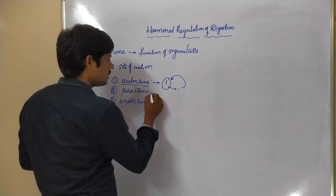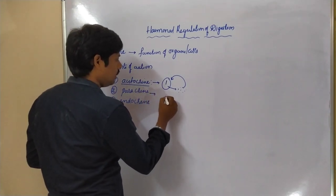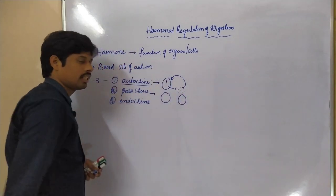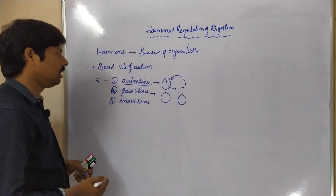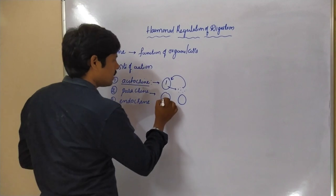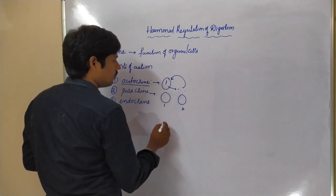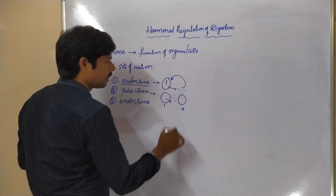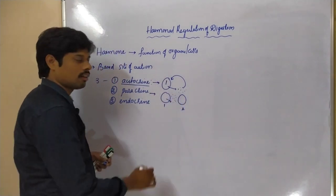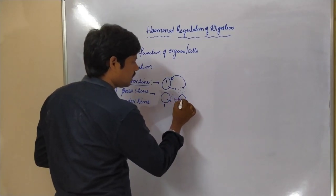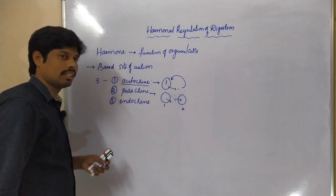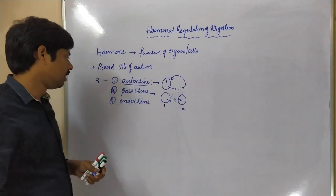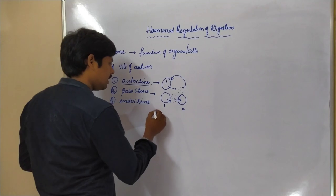In the paracrine situation, there are two adjacent cells — cell 1 and cell 2. Cell 1 produces the hormones, and these hormones act on the adjacent cell 2. That is called a paracrine situation.